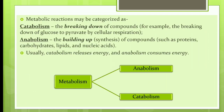Metabolism is divided into two parts: catabolism and anabolism. Catabolism denotes the breaking down of compounds, like the breaking down of glucose to pyruvate through cellular respiration. Anabolism denotes the building up of compounds, like carbohydrates, lipids, and nucleic acids. Catabolism releases energy, while anabolism consumes energy — this is the basic difference between the two.